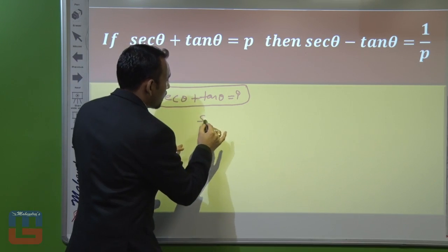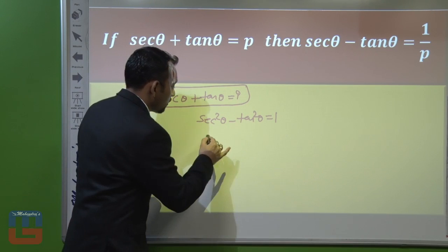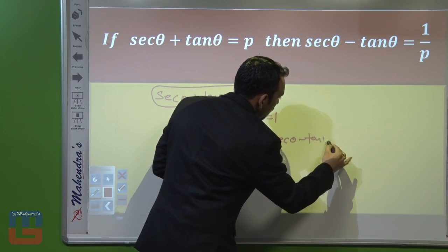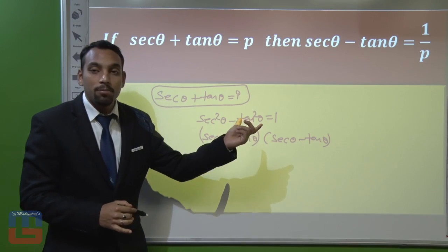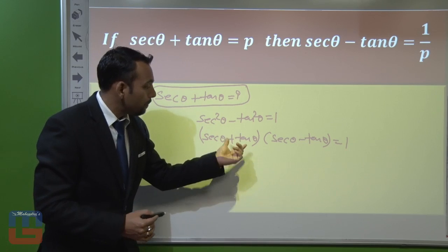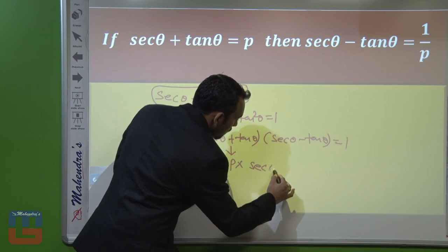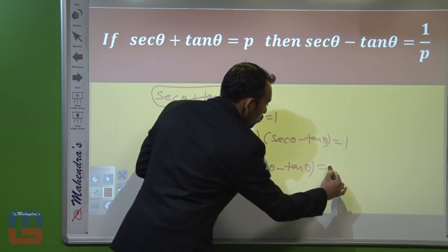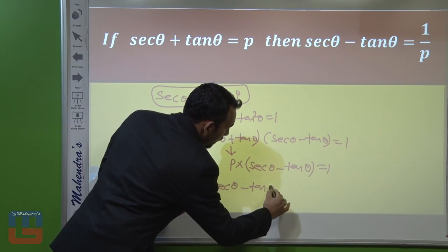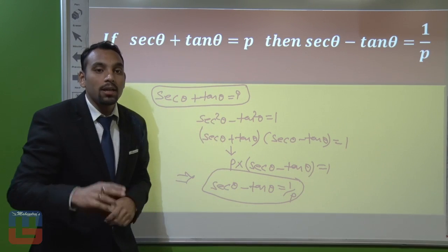We know that sec²θ − tan²θ is always equal to 1. This can be written as (sec θ + tan θ)(sec θ − tan θ) = 1, using the formula a² − b² = (a + b)(a − b). Since sec θ + tan θ = p, we substitute to get p × (sec θ − tan θ) = 1. Therefore, sec θ − tan θ = 1/p.